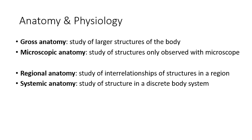A little bit of terminology: gross anatomy is when we're talking about larger structures of the body — structures you can basically see with the naked eye. Microscopic anatomy refers to things that are very small and would likely need a microscope to visualize. For example, if we're talking about your lungs, those are very large organs — that's gross anatomy. But the air sacs inside your lungs are microscopic anatomy because those are very small. So gross is large, microscopic is very small.